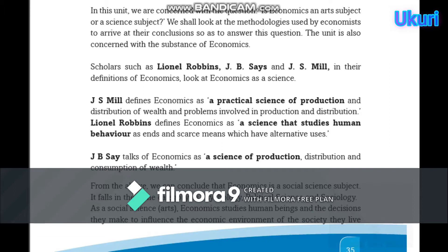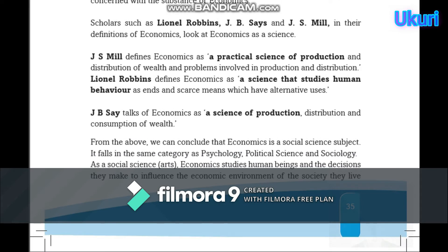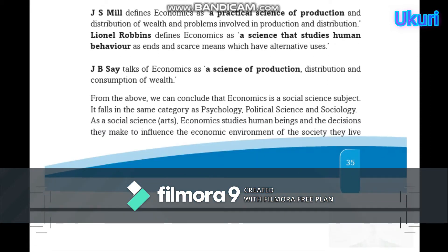The unit is also concerned with economists' perspectives. Scholars such as Lionel Robbins, as we mentioned in the definition, described economics as a science. J.S. Mill defines economics as a practical science of production and distribution of wealth. Lionel Robbins defines economics as a science that studies human behavior with ends and scarce means which have alternative uses. J.B. Say talks of economics as a science of production. All these economists have stated that economics is like a science.